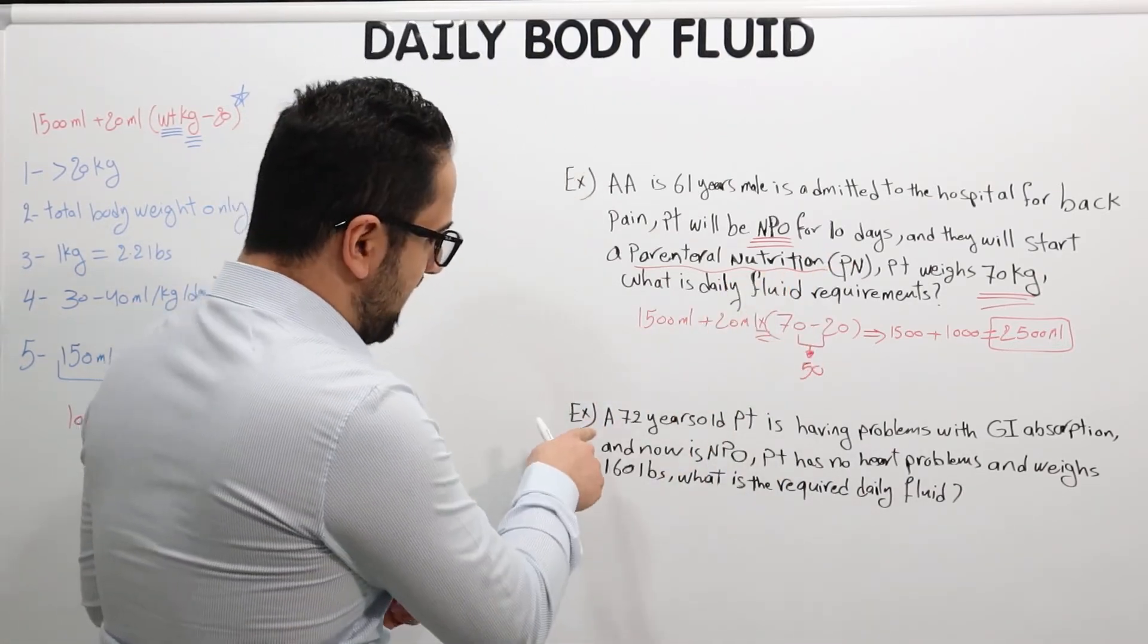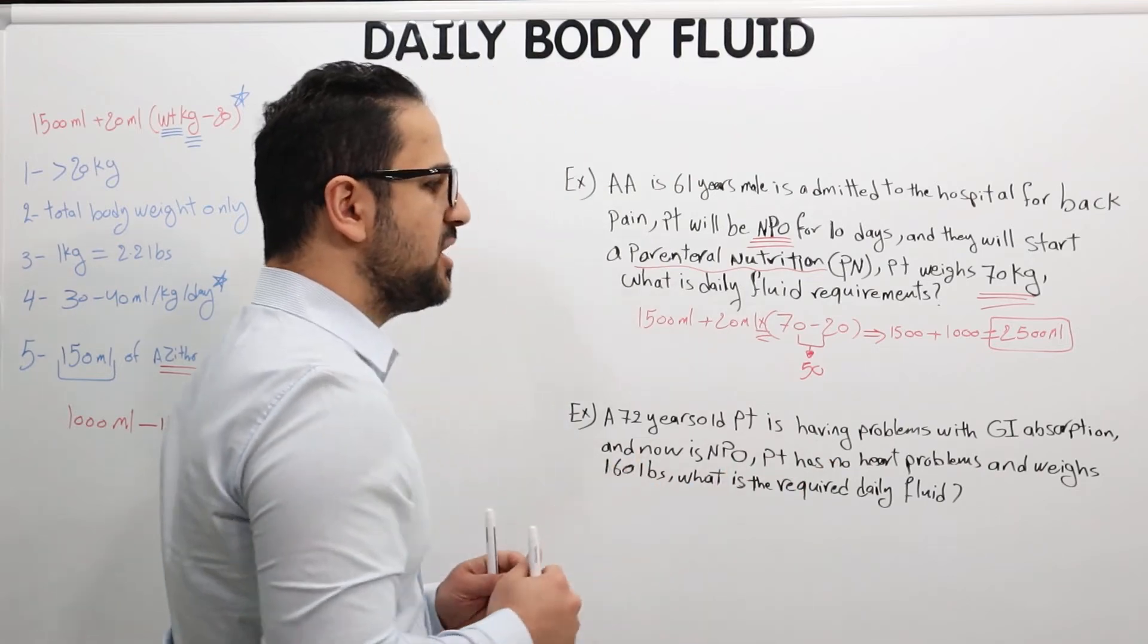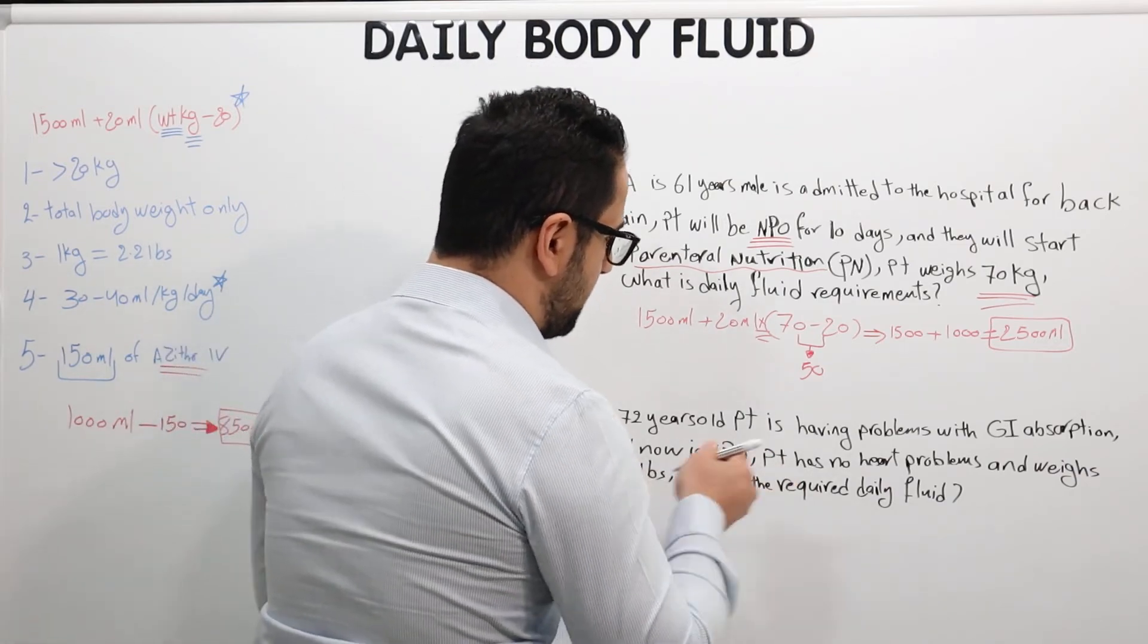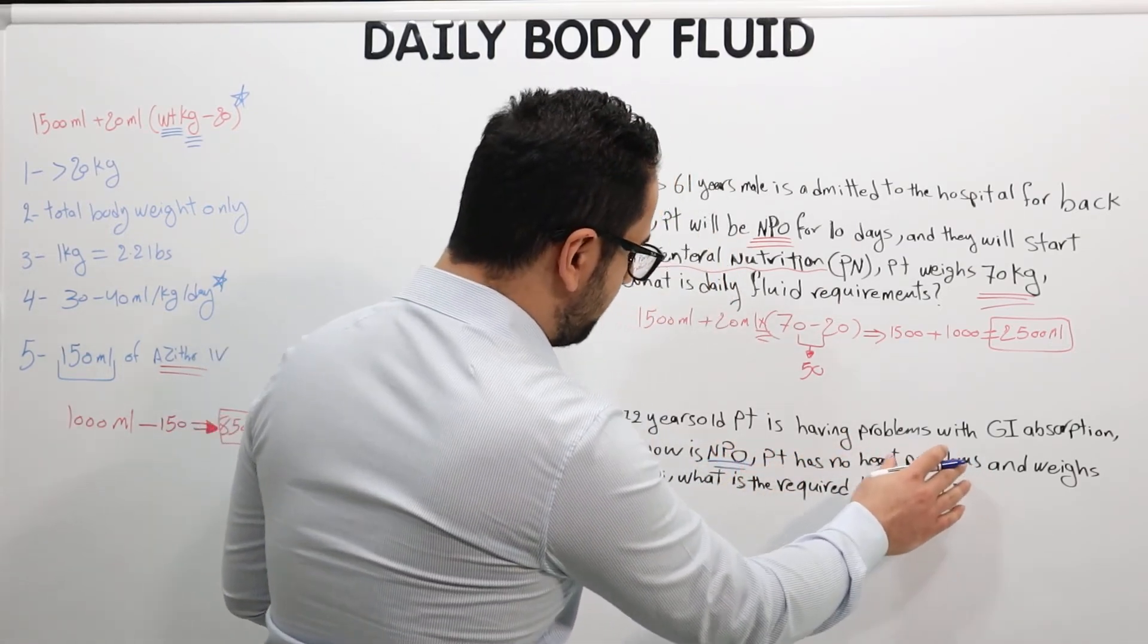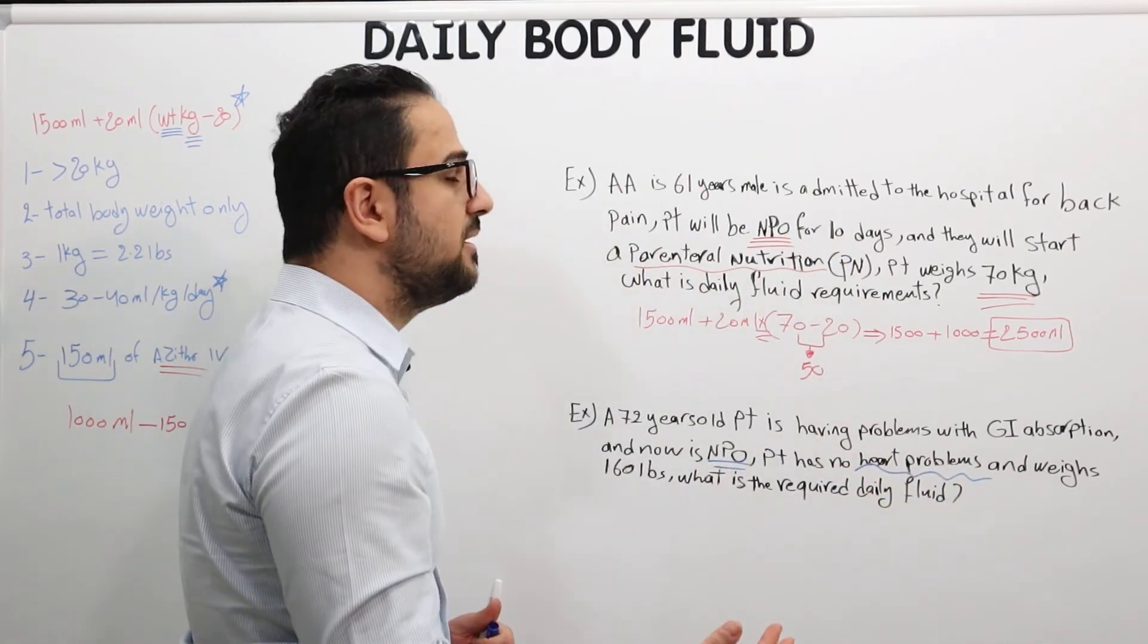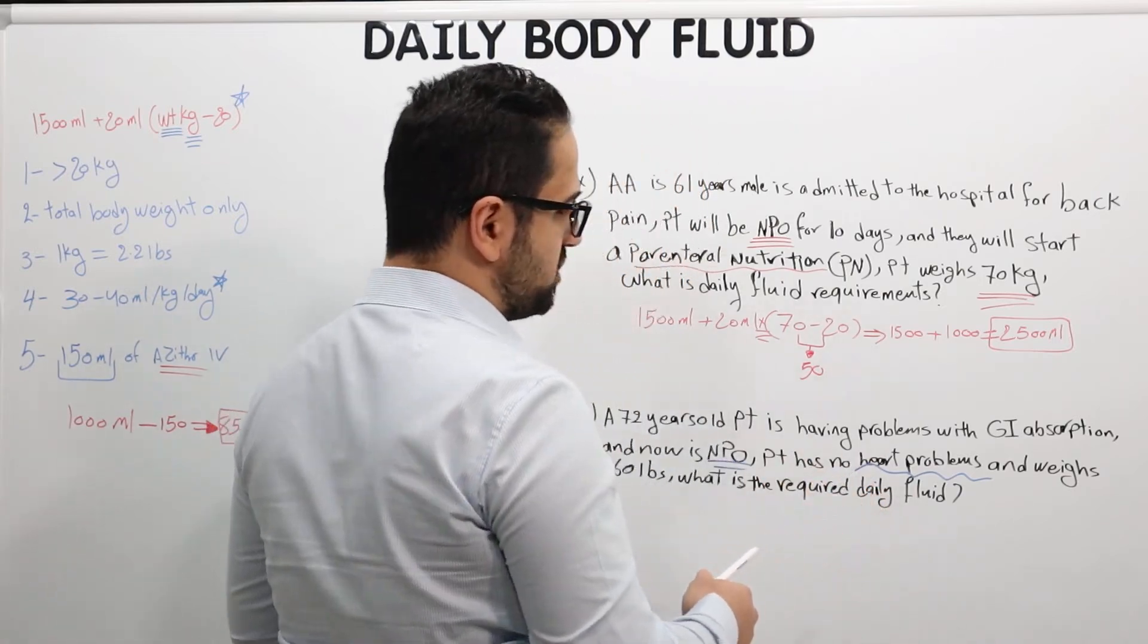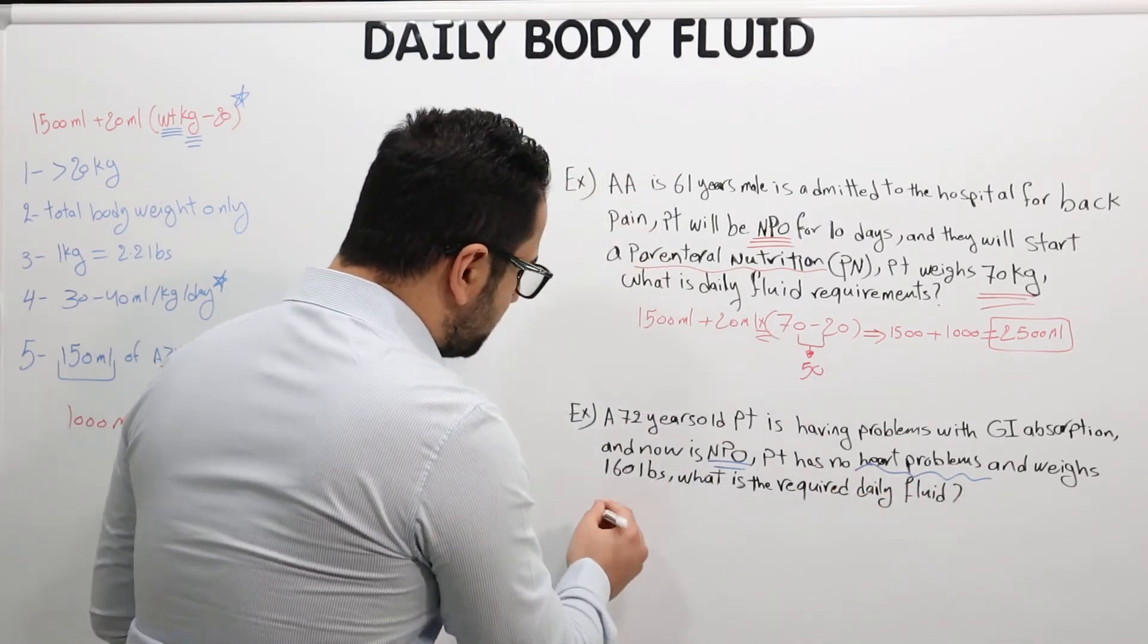Question number two. A 72-year-old patient is having problems with GI absorption. Here we go. We have a patient that cannot absorb the nutrition through their GI, and now they are NPO. So they cannot absorb and now they are NPO. Patient has no heart problem. This is actually a good thing to keep in mind—if they're having a heart problem like heart failure, maybe there is consideration for a reduction in the volume as well. So this is a good thing to look after, whether it's in the question or if you're looking at a chart for a patient. You should consider all these facts. Patient weighs 160 pounds.